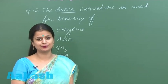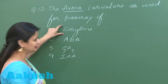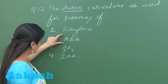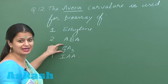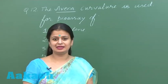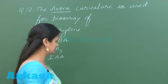First option is ethylene, so it cannot be. ABA, abscisic acid, it cannot be. GA, gibberellic acid, it cannot be. IAA, indole acetic acid, that is auxin. So the right answer for this question is option number four.